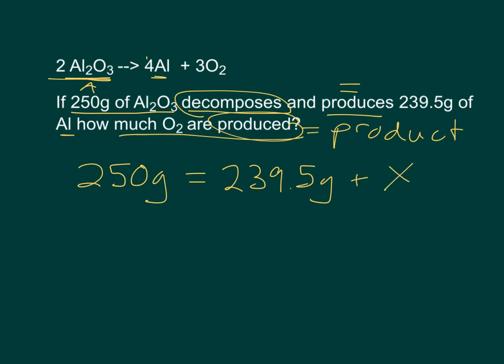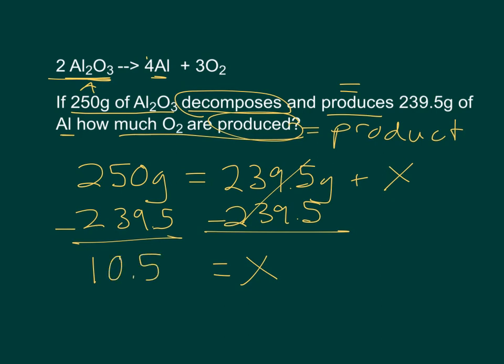So again, the way I've got this equation set up is I would basically have to isolate my variable, and I do that by subtracting 239.5 from each side. So 239.5 minus, and 239.5 minus. This side cancels out. X is equal to 10.5 grams. So my answer is that I would be forming 10.5 grams of oxygen, and I would want to circle that.